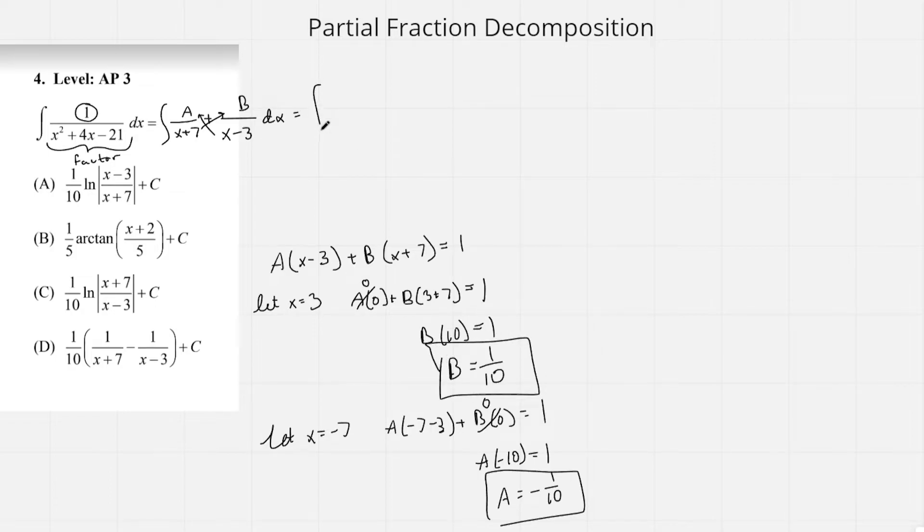Now we can plug in these numbers. I'm just going to switch these around when I plug it in just to make it a little easier for the next thing I'm going to do. So we're going to do B first: 1 over 10, which is B, times 1 over (x minus 3). And then we're going to do minus 1 over 10, because the A is negative 1 over 10, times 1 over (x plus 7).